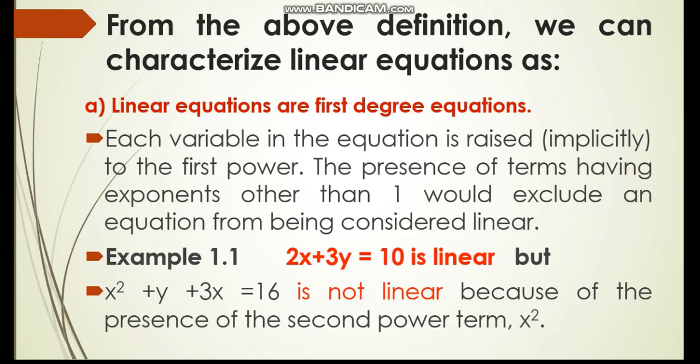As you can observe, this example, 2x plus 3y equals 10 is linear. Look, 2, 3 are coefficients of the variable x and y, respectively. And there are two variables involved here, x and y. The exponent for the variable y and x is 1, which is implicitly stated. But, look at this equation. x squared plus y plus 3x is not linear. Why? Because the exponent in variable x is different from 1, which is 2.